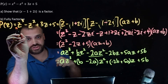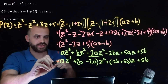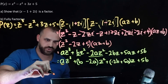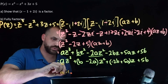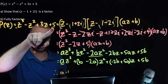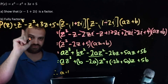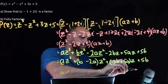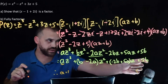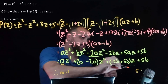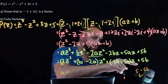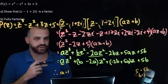The z cubed coefficient on the left is 1. The z cubed coefficient on the right is a. Therefore a equals 1. The constant on the left is 5. The constant on the right is 5b. Therefore b equals 5 divided by 5, which is 1.